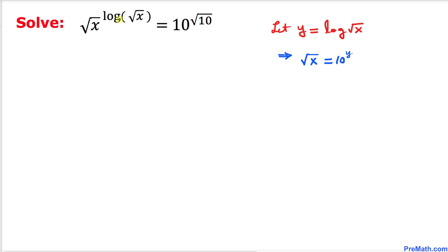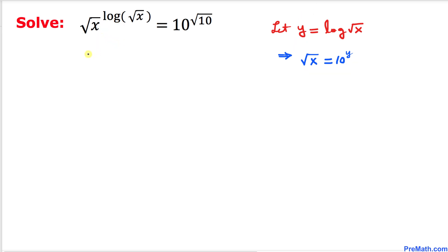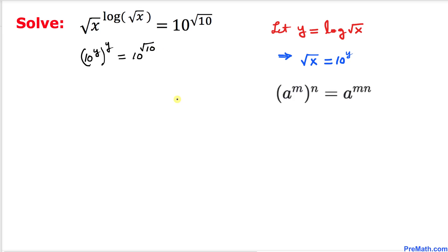Now let's revert back to our original equation. Square root of x I am going to replace with 10 power y, and log of square root of x I am going to replace with y. So our equation becomes 10 power y, raised to the power y, equals 10 power square root of 10. The left-hand side can be written as 10 power y times y, and multiplying gives us 10 power y squared, equals 10 power square root of 10.